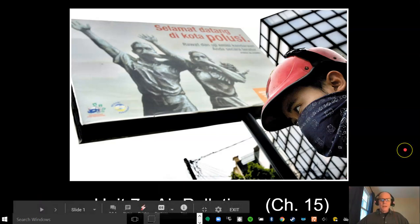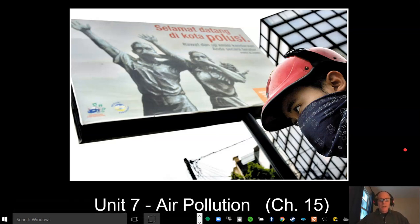This is the unit 7.1 screencast which corresponds to chapter 15 in your textbook on air pollution. So we're just beginning air pollution.